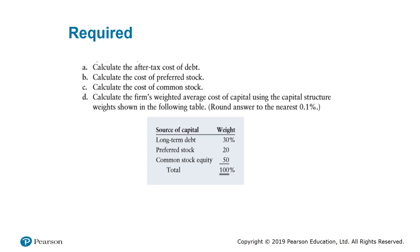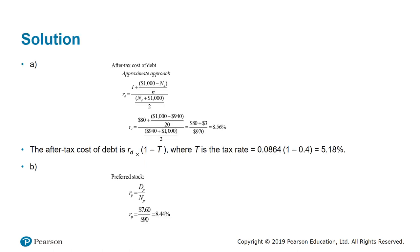We have already calculated the after-tax cost of debt, the cost of preferred stock, and the cost of common stock. The final step is to calculate the WACC — weighted average cost of capital. The weights are given: long-term debt is 30%, preferred stock is 20%, and common stock equity is 50% — the weights must sum to 100%. The after-tax cost of debt equals 5.18% after substituting the interest and net proceeds and multiplying the before-tax cost by (1 minus the tax rate).